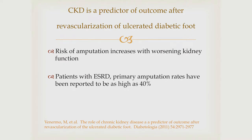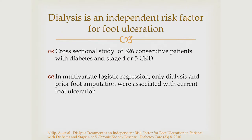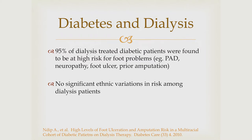Chronic kidney disease is a predictor of outcome after revascularization of the ulcerated diabetic foot. This study showed that the increased risk of failure or subsequent complication was higher with a higher level of kidney disease. Dialysis patients were at particular risk — as high as 40%. Dialysis itself is an independent risk factor for ulceration. A cross-sectional study of 326 consecutive patients with diabetes and stage 4 or 5 kidney disease showed dialysis and prior foot amputation were highly associated with current presence of foot ulceration. In this study, 95% of dialysis patients were found to have a high-risk component: PAD, neuropathy, foot ulceration, or prior amputation.